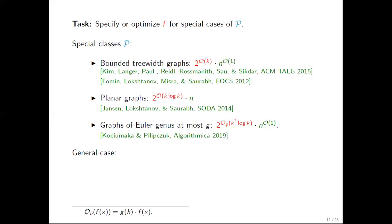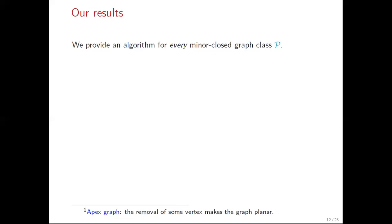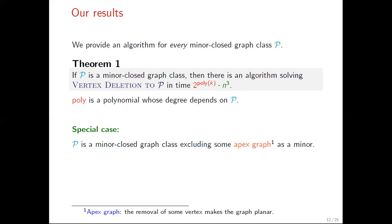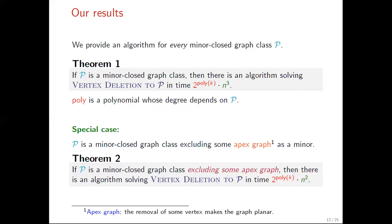Now, for the general case of the problem, for every minor-closed graph class, only very recently an explicit function f was given, as a by-product of the results of Fomin, Lokshtanov, Panolan, Saurabh, and Zehavi. This function is still enormous, or to use the words of the authors, humongous. So what we do, what is our result, is to solve the problem for every minor-closed graph class. In fact, for every fixed P, we provide an algorithm solving vertex deletion to P in time 2^(poly k) times n^3, where poly is a polynomial whose degree depends on P. In the special case of minor-closed graph classes excluding some apex graph as a minor, that is a graph one vertex away from being planar, we improve n cubed to n squared.